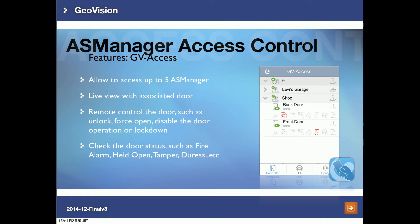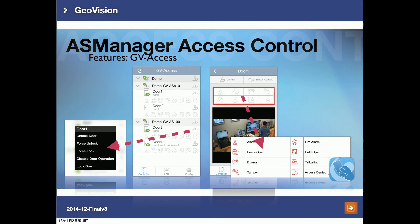The GVSS mobile application for iOS and Android lets you remotely connect to up to five AS Managers. You can view live camera feeds associated with doors, and remotely control doors — force unlock, force open, disable the door, or trigger lockdown. You can also check door status such as held open, tamper, anti-duress, alarm, fire alarm, tailgating, dual authentication, or access denied.